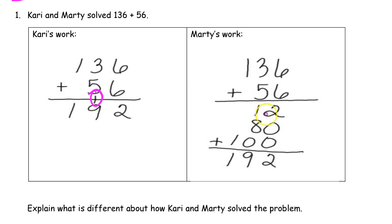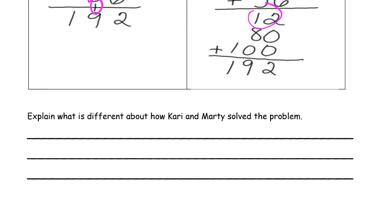But Marty didn't actually do that. He just wrote 12 when he added 6 plus 6. That's really the main difference, I think.